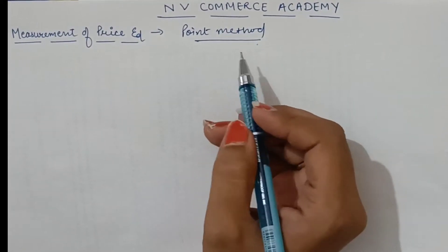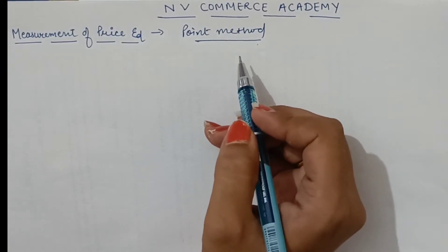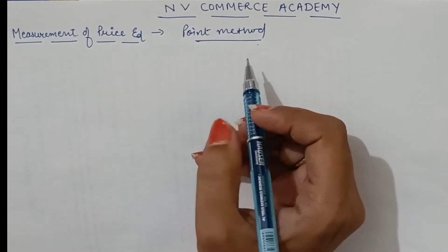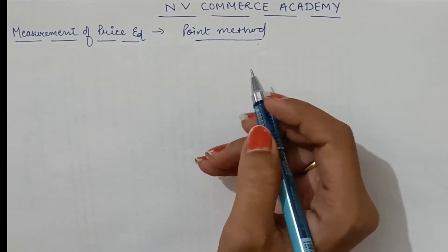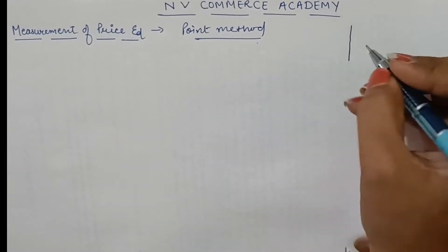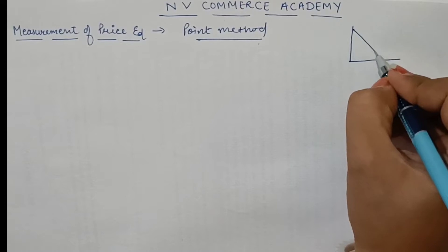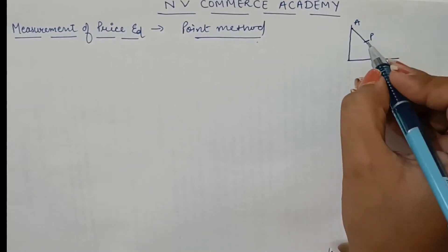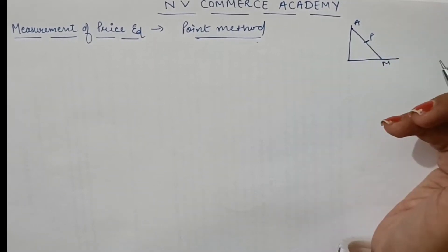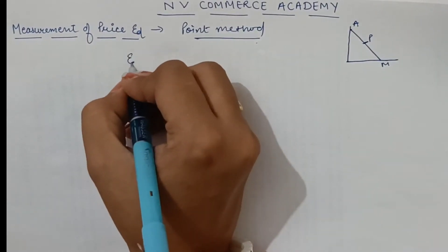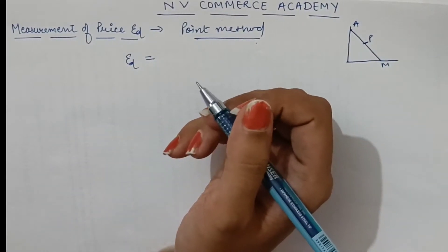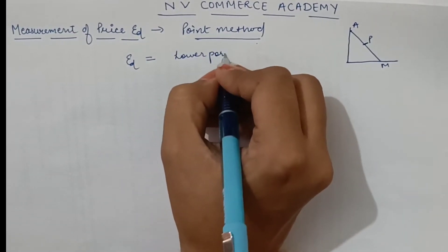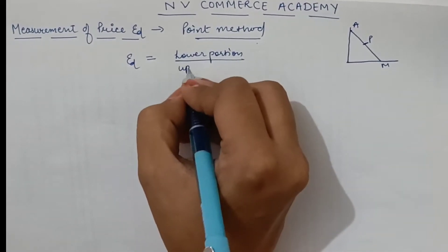In this method, price elasticity of demand at different points on a given demand curve is measured. Price elasticity at every point of a given demand curve is measured separately. Suppose this is our demand curve, say A and M. At point P, if we have to calculate price elasticity of demand, so according to the point method, elasticity of demand is equal to the lower portion of the demand curve divided by the upper portion of the demand curve.